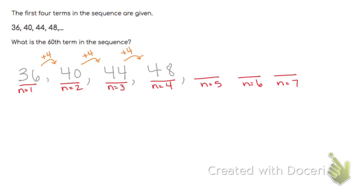So to find the fifth term, we just add four again. You see, it's 52. To find the sixth term, we add four again. And so on. We just keep adding four.